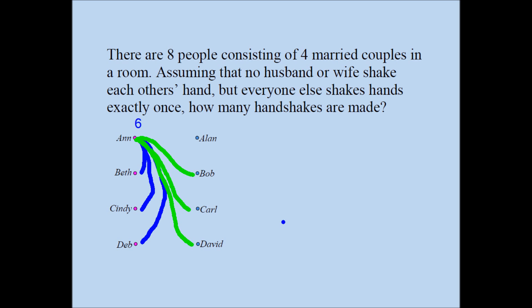The same thing applies to each of the remaining seven people. Alan will also have six handshakes, Bob will have six handshakes, Beth will have six handshakes, Cindy will have six handshakes, and Deb will have six handshakes.